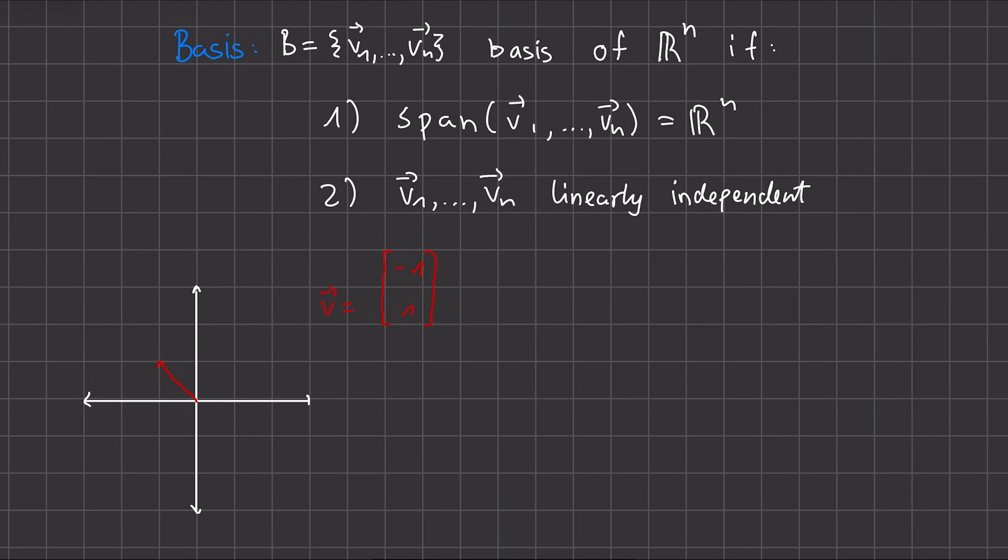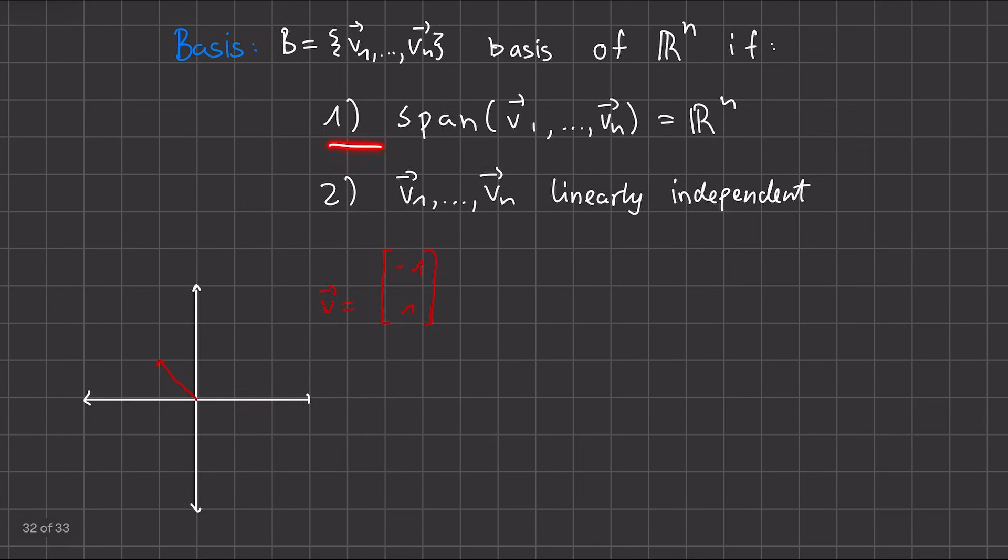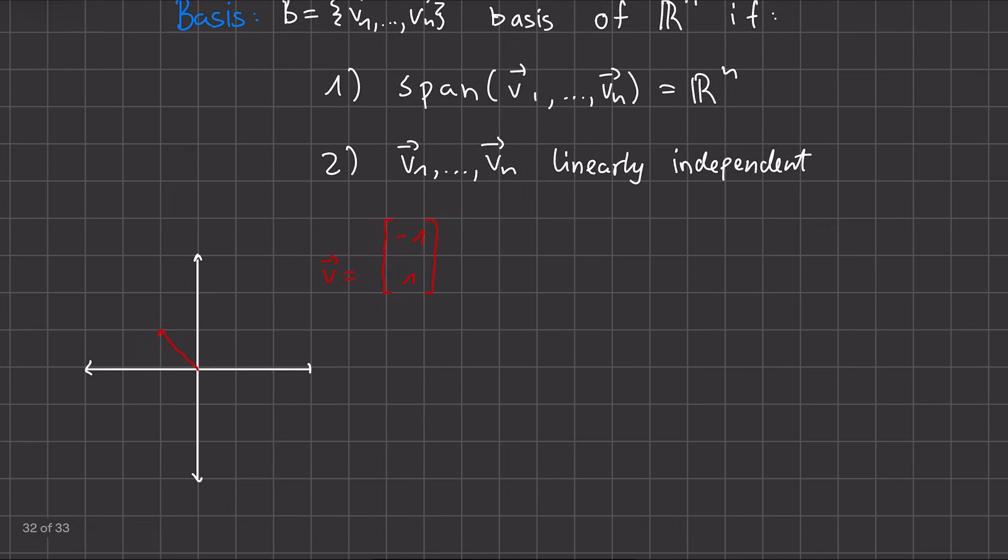And just looking at v by itself, we can see that this is linearly independent, simply because we only have one vector. However, it no longer is a spanning set, so it doesn't satisfy the second condition, because we can only reach points that are on this line. And for example, this point from our R² is not reachable.